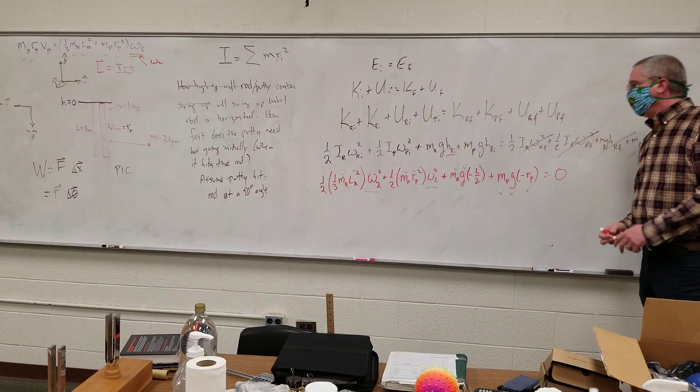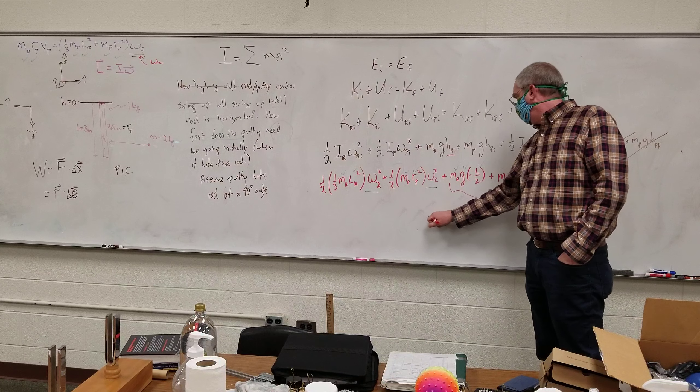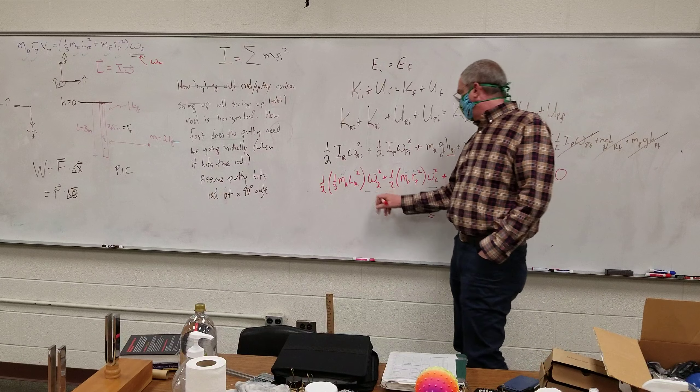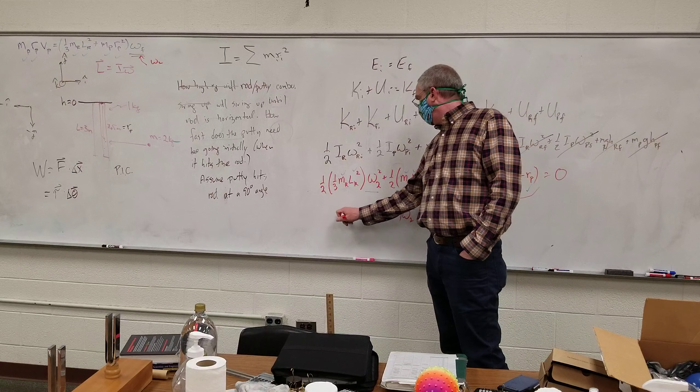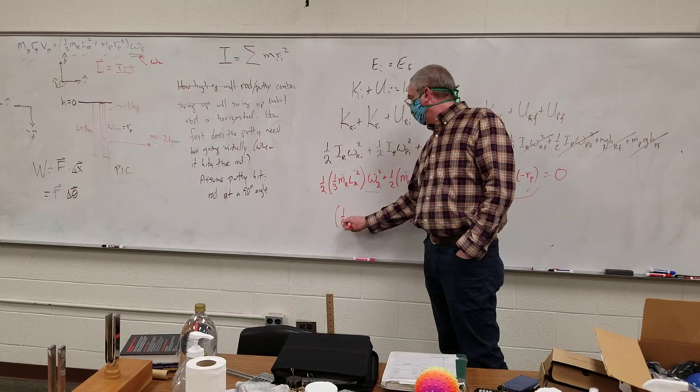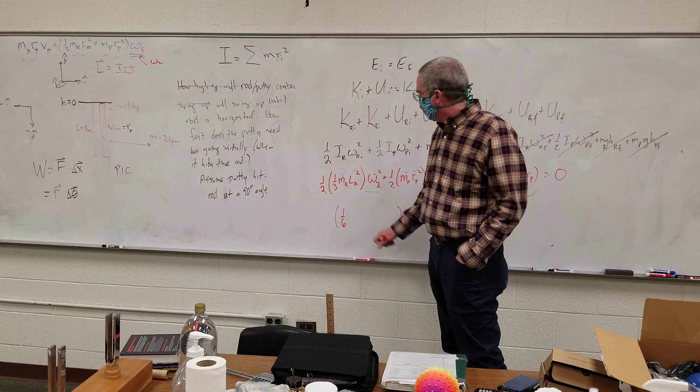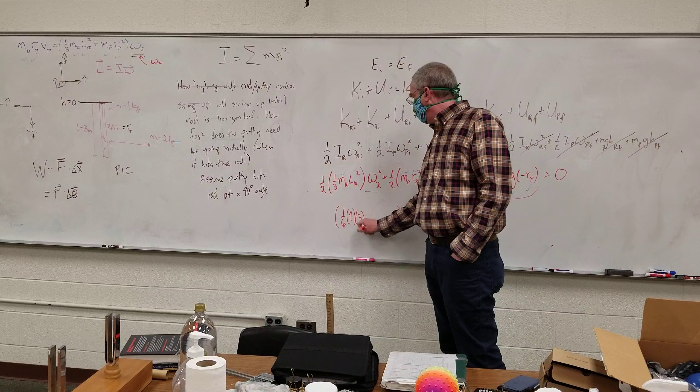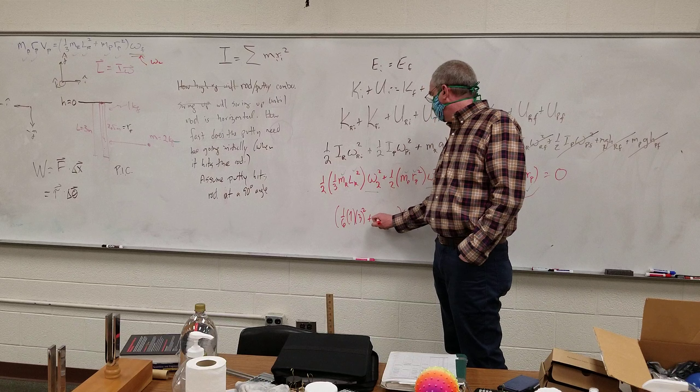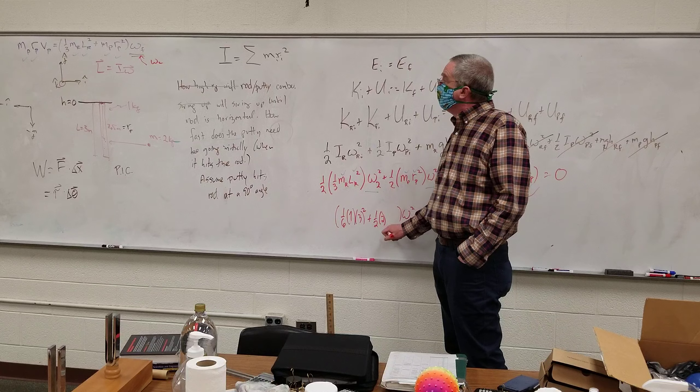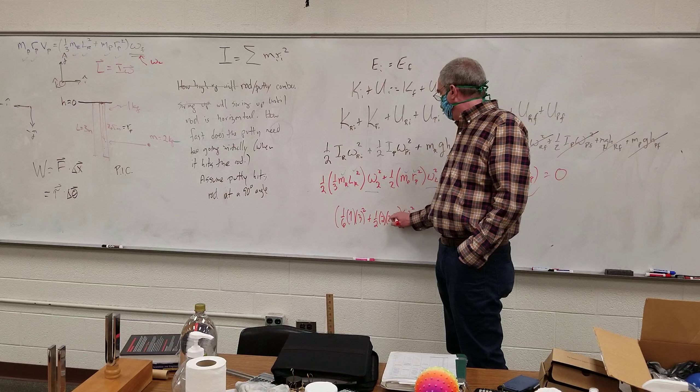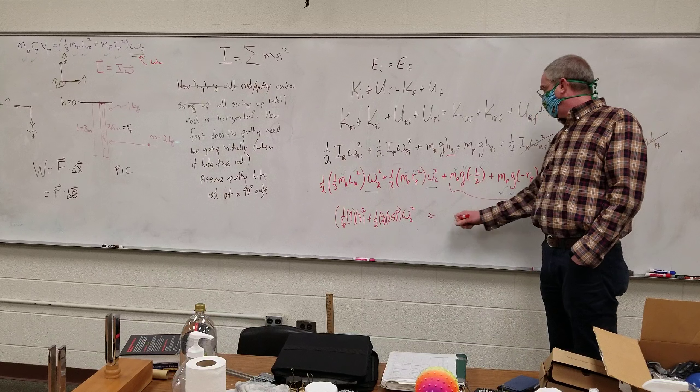And so for some sense of closure, let's do some numbers. We can bring over to the other side and factor out omega 2, so we have omega 2 squared. And then 1/6, what's my rod, 1 kilogram, times 1, times 3 squared, plus 1/2, times 2, times 2.5 squared.